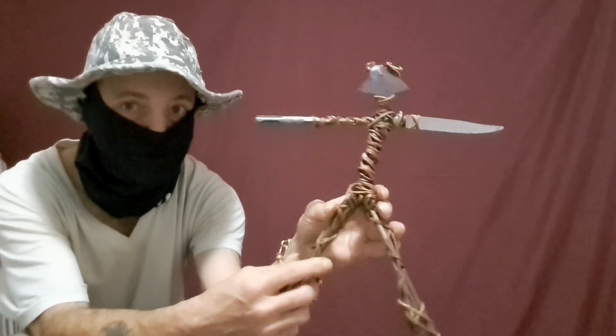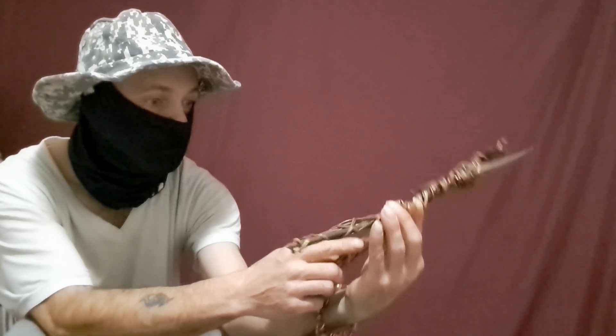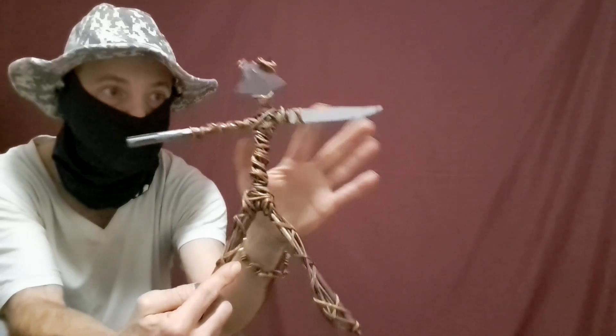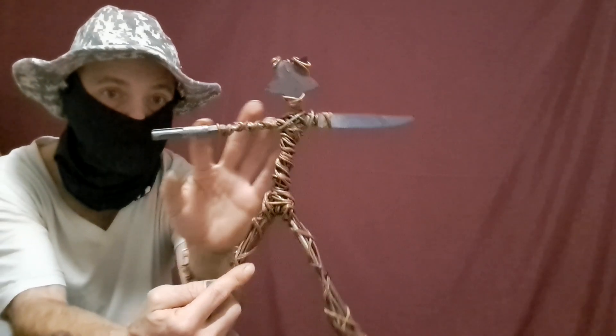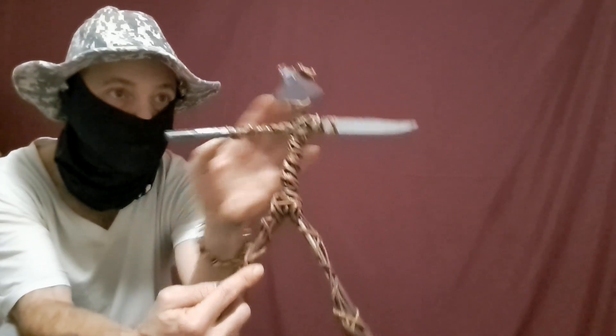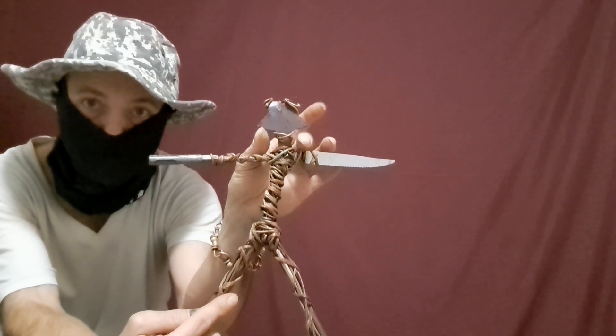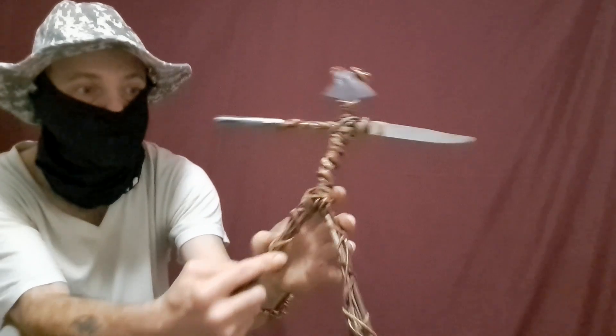I think I'm going to call him Star Head. He's made with copper. He's made with hacksaw blades. He's made with a steak knife and a drill bit. And that was some kind of badge that went onto a costume of some kind, maybe.